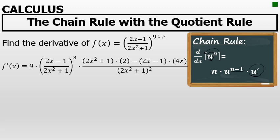Let's begin. The first step is to bring the power to the front, so the 9 comes to the front of the quotient, then decrease the power by 1 down to 8. Most of the work in this problem comes from u prime — taking the derivative of 2x minus 1 over 2x squared plus 1. This requires the quotient rule. The quotient rule states that the derivative of a quotient is the denominator, 2x squared plus 1 in this case, times the derivative of the numerator. The derivative of 2x minus 1 is 2.